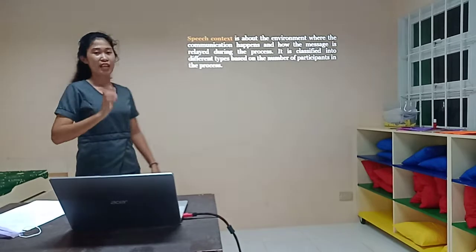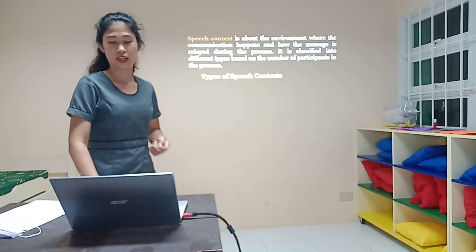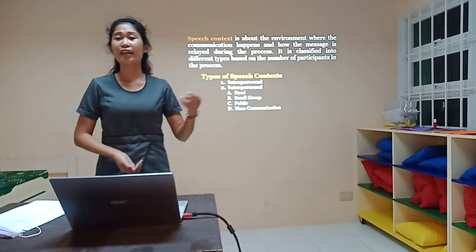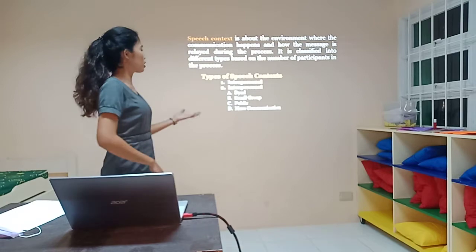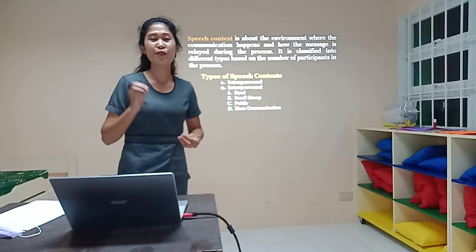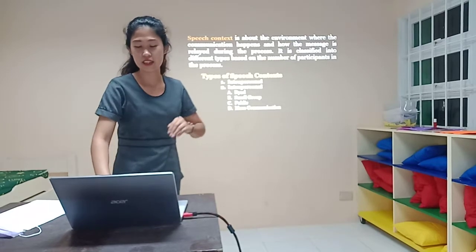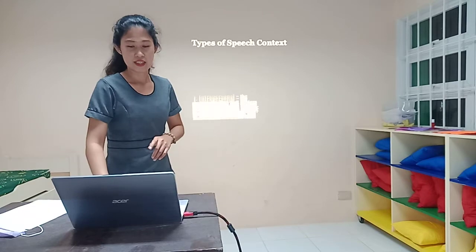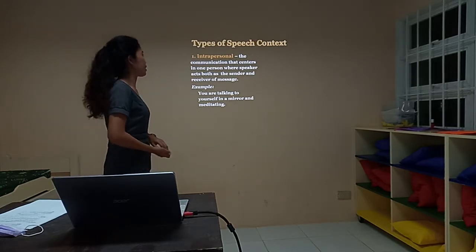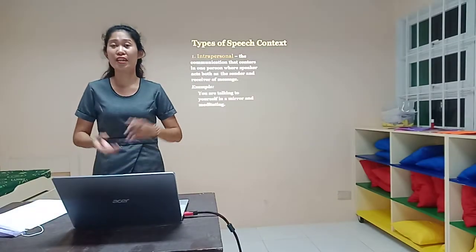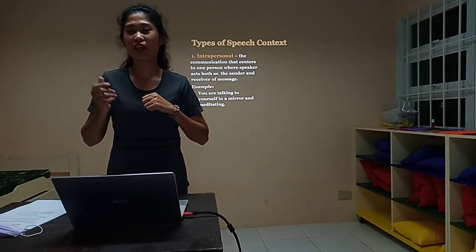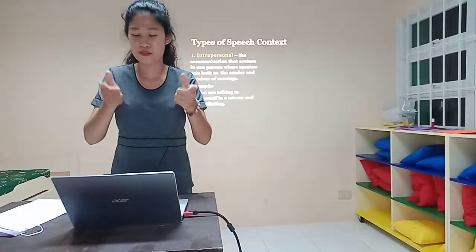Speech context is classified into different types. We have intrapersonal and interpersonal. Interpersonal has categories: we have dyad, small group, public, and mass communication. In order for us to familiarize these different types of speech context, let's define them. First is intrapersonal — the communication that centers on one person where the speaker acts as both the speaker and the receiver. From the word 'intra,' it means within — within yourself. The communication takes place within ourselves. Are you able to get that?